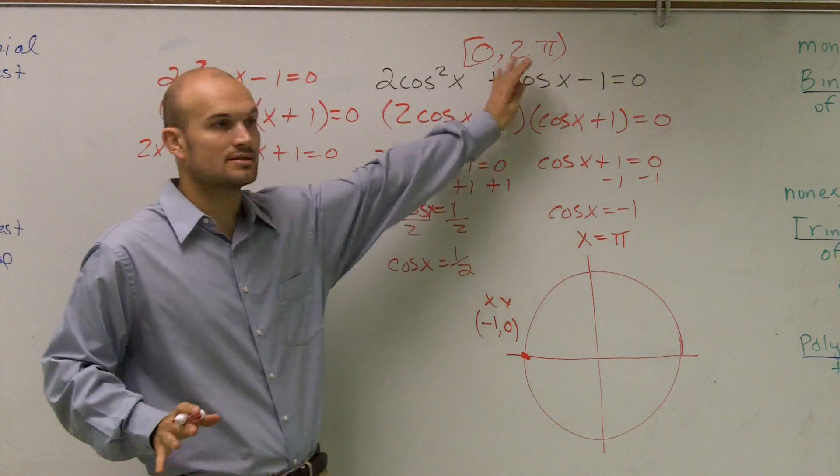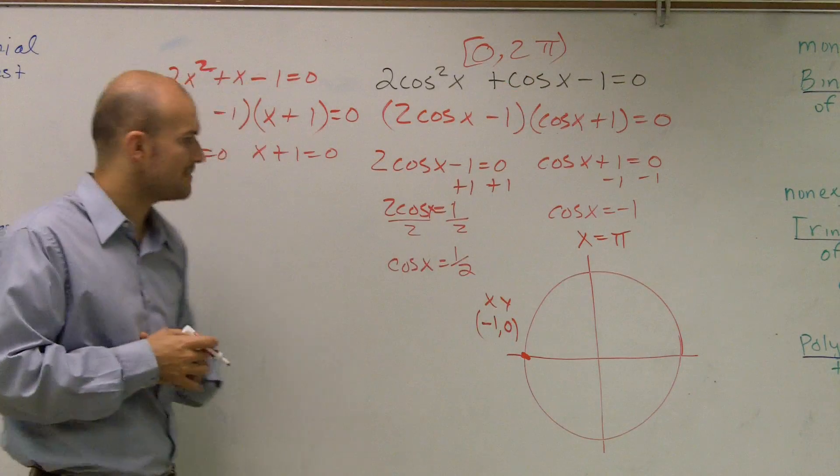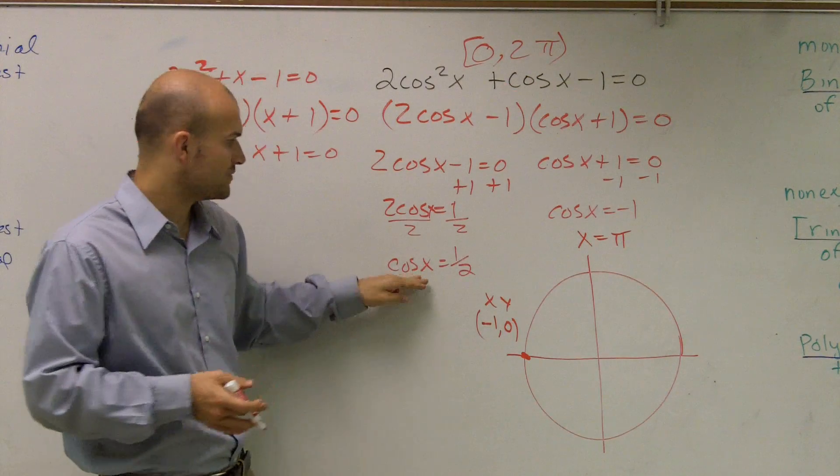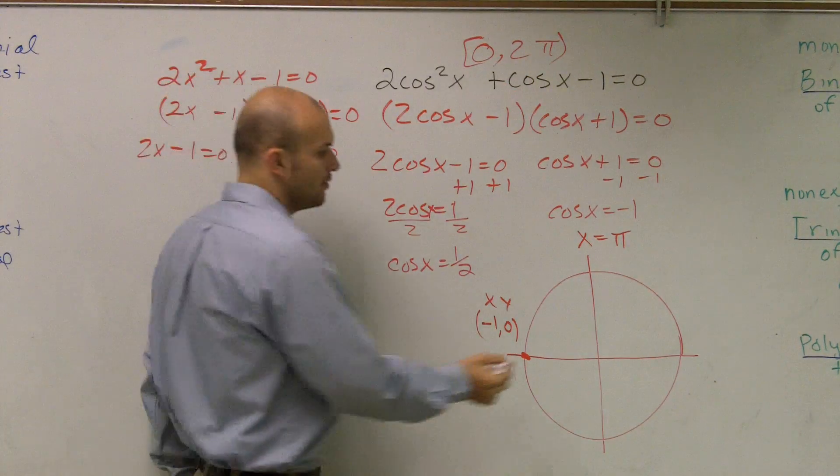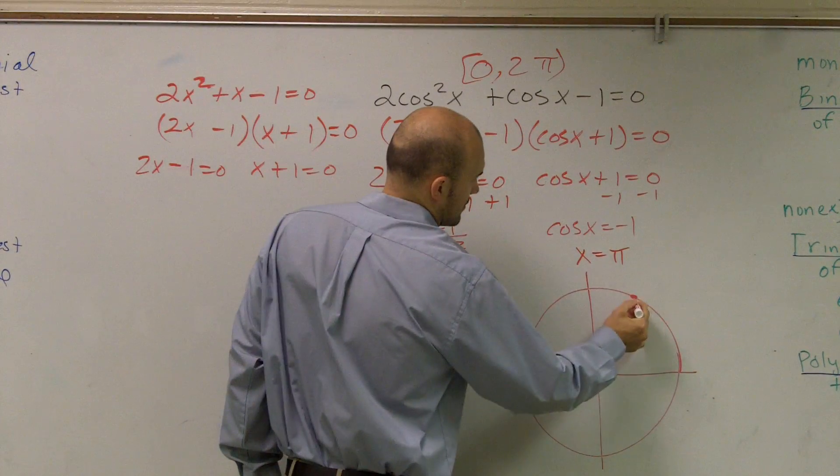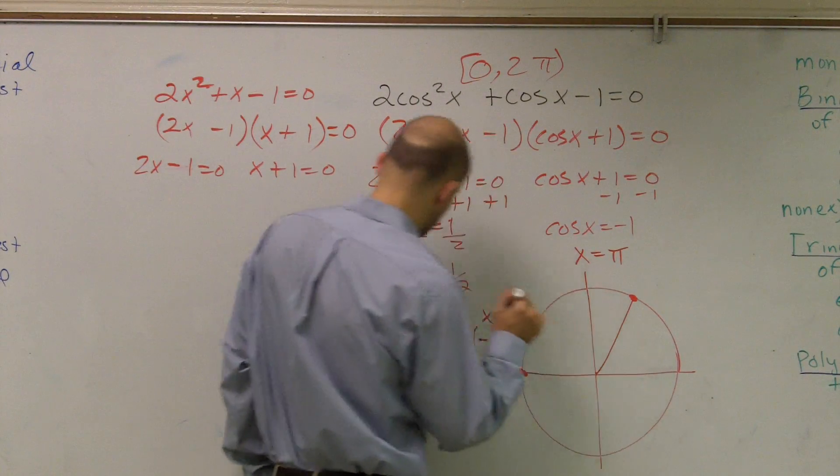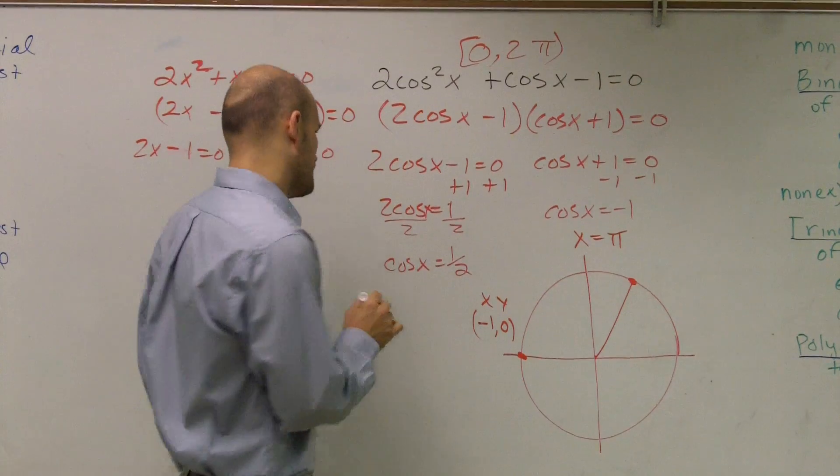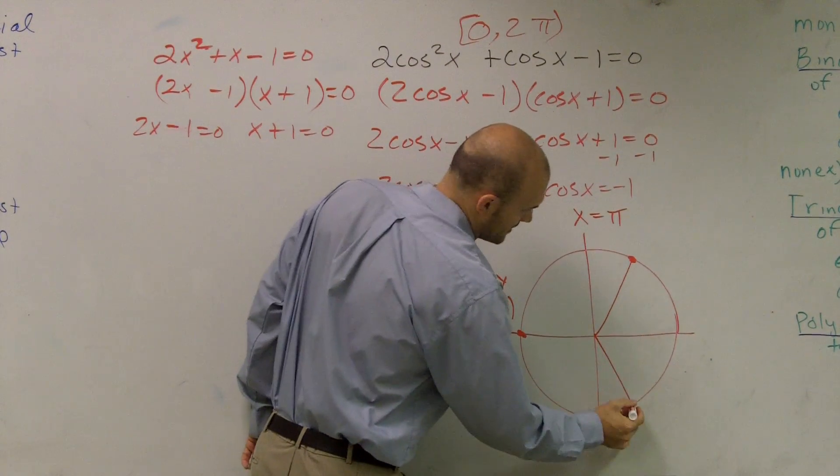And I'm not going to do the plus 2 pi, because we have the constraint between 0 and pi. Then the next thing I need to look at is, when does cosine equal 1 half? Well, there's two points. This point right here. And go ahead, 1 half. And then down right there.